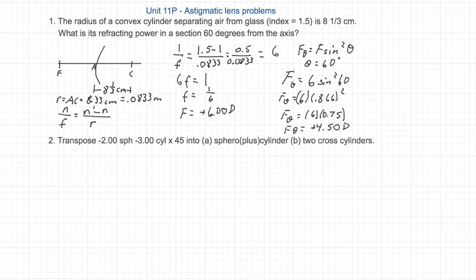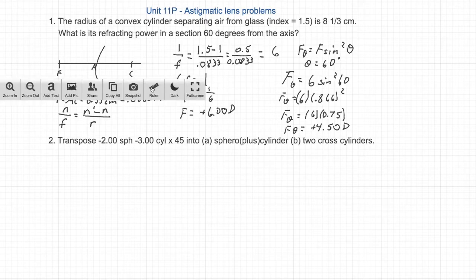Question 2: Transpose minus 2 sphere minus 3 cylinder axis 45 into A, a sphere or plus cylinder, and B into two cross cylinders.